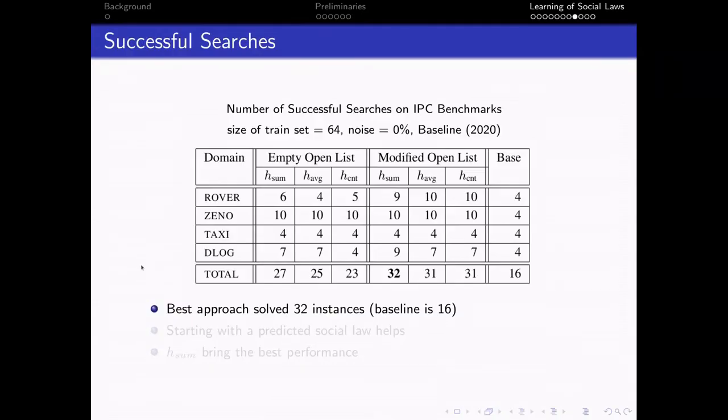So, in terms of successful searches, we see that our best configuration solved 32 instances where the baseline is 16. Also, starting with the predicted social law helps because the modified open list configurations have solved more than the empty open list configurations. And also, the h-sum heuristic brings the best performance.